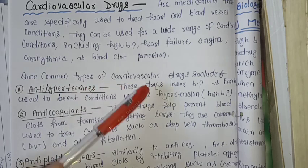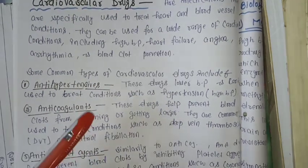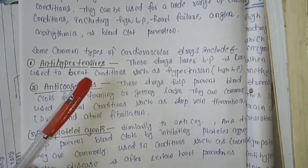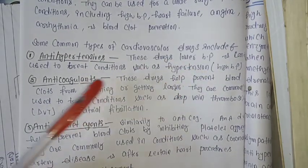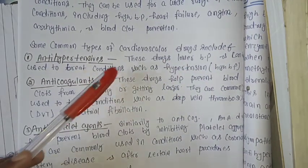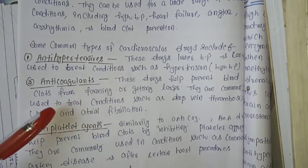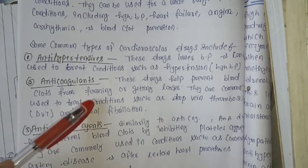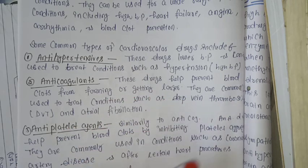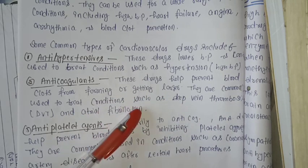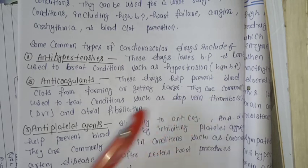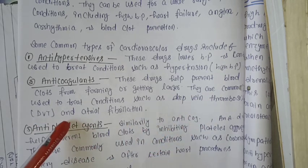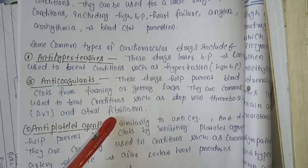Some common types of cardiovascular drugs include: 1. Antihypertensives — these drugs lower blood pressure and can be used to treat conditions such as hypertension or high BP. 2. Anticoagulants — these drugs help prevent blood clots from forming or getting larger. They are commonly used to treat conditions such as deep vein thrombosis and atrial fibrillation.